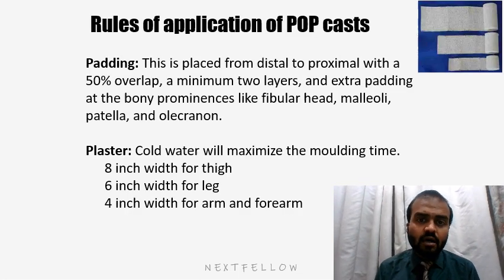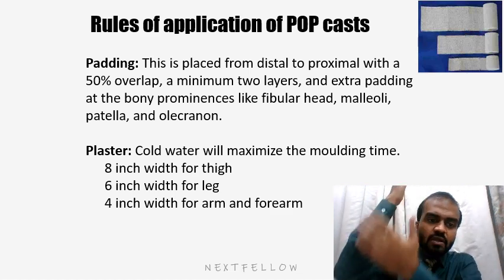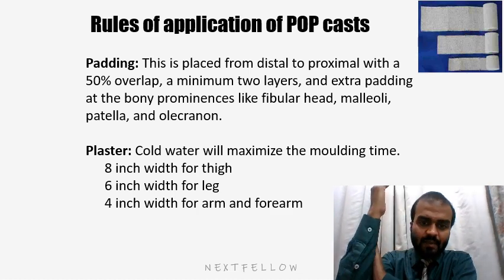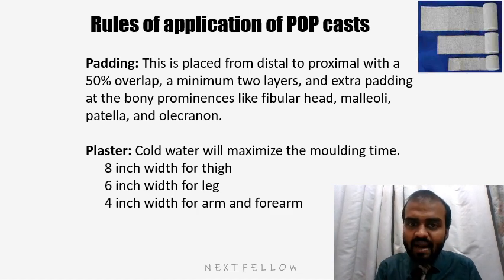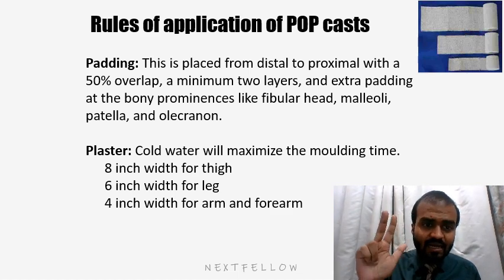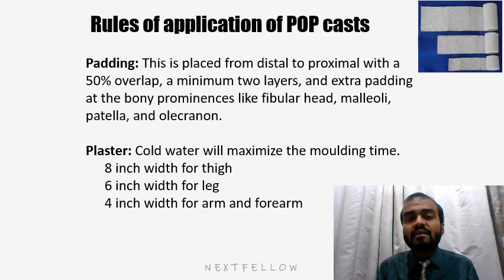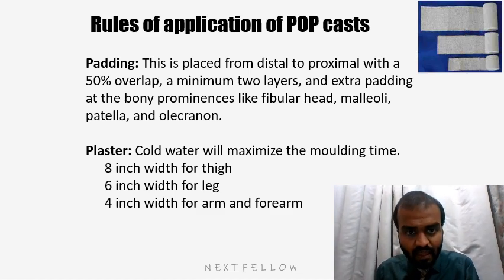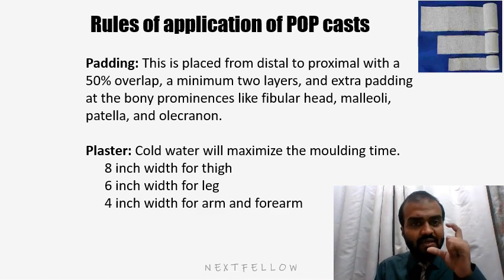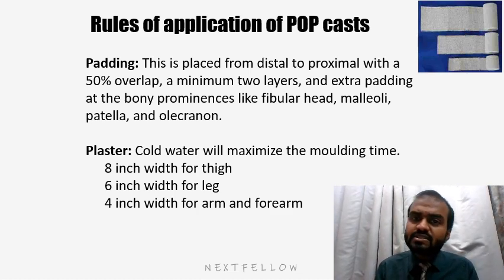The rules of applying a POP cast: the most important rule is optimum padding, placed from the distal to the proximal part with a 50% overlap. A minimum of two layers are required, and extra padding is necessary at bony prominences like the fibular head, malleoli, patella, and olecranon process. Cold water is used to maximize the molding time. The thumb rule for POP width is 8 inches for the thigh, 6 inches for the leg, and 4 inches for the arm and forearm.